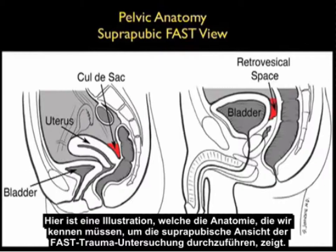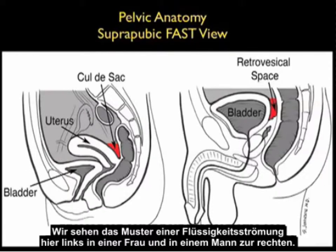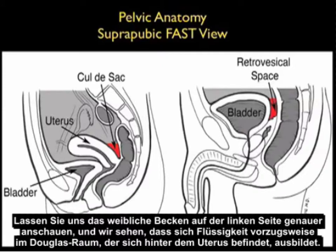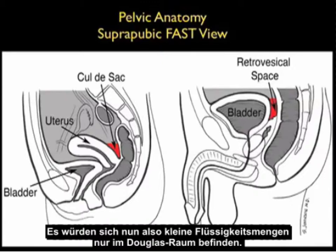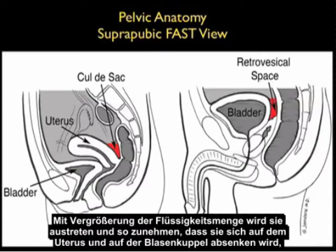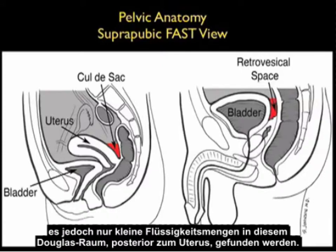Here's an illustration showing the anatomy we'll need to know to perform the suprapubic view. We see the pattern of fluid flow in a female to the left and a male to the right. In the female pelvis, fluid will preferentially develop in the pelvic cul-de-sac located behind the uterus. Small amounts of fluid will only be located there, but as the amount of fluid enlarges it will layer out on top of the uterus and on top of the dome of the bladder.